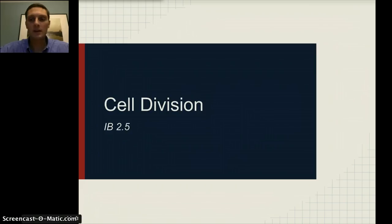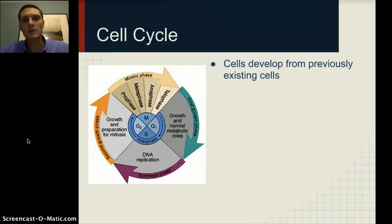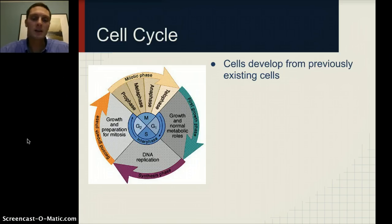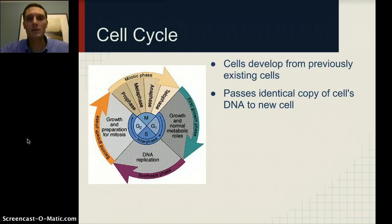When we're talking about the cell cycle, a couple things we want to remember are some components of the cell theory. The first is that cells develop from previously existing cells. We're going to see how that happens today. The second is that an identical copy of the cell's DNA is passed along to the new cell — the DNA in the original cell is passed on to our copied cell, and it's going to be identical.